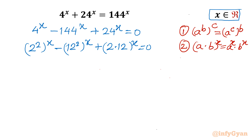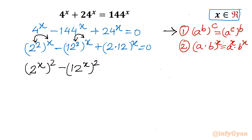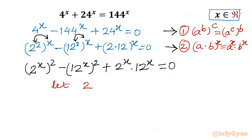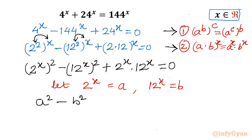Let's apply both properties. Switching the two powers using Property 1, I write (2^x)² minus (12^x)², and using Property 2, I write 2^x × 12^x = 0. Now I will use substitution: let 2^x = a and 12^x = b. So our equation converts into a² - b² + ab = 0.